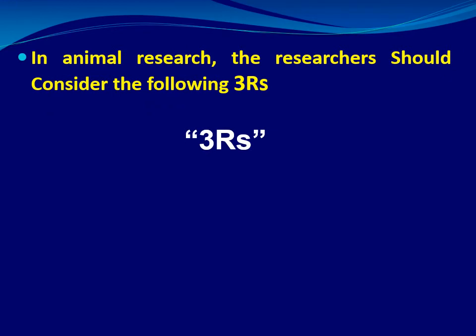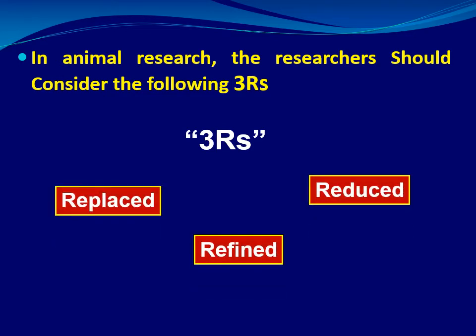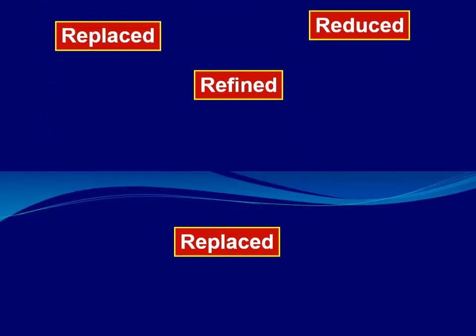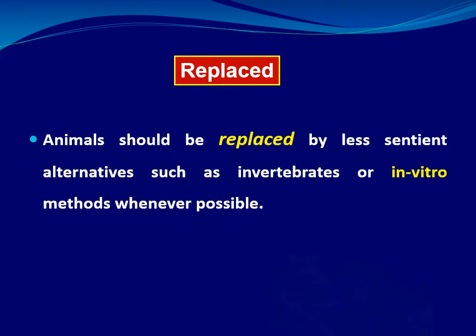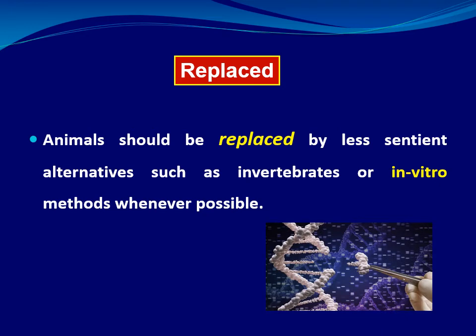Animal research should consider the three R's: Replace, Refine, and Reduce. First, Replace: animals should be replaced by less sentient alternatives such as invertebrates or in vitro methods whenever possible.